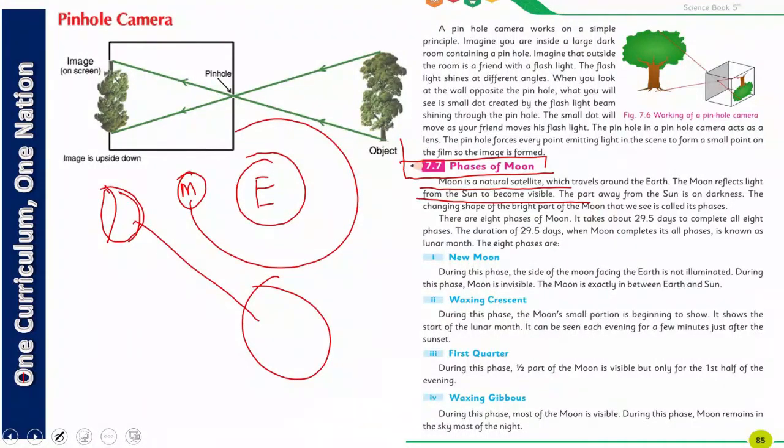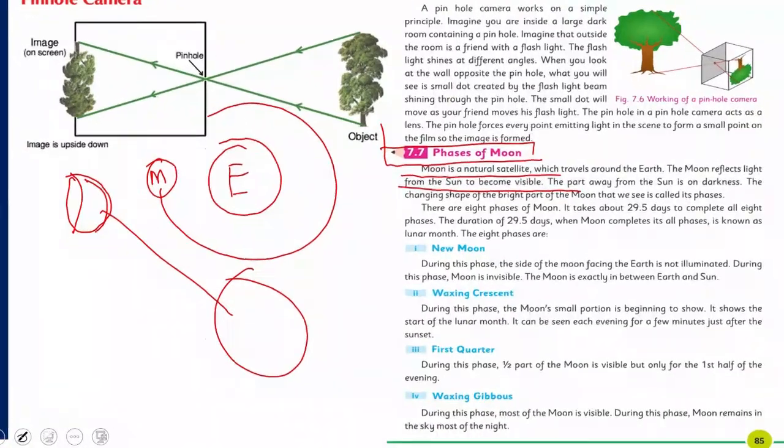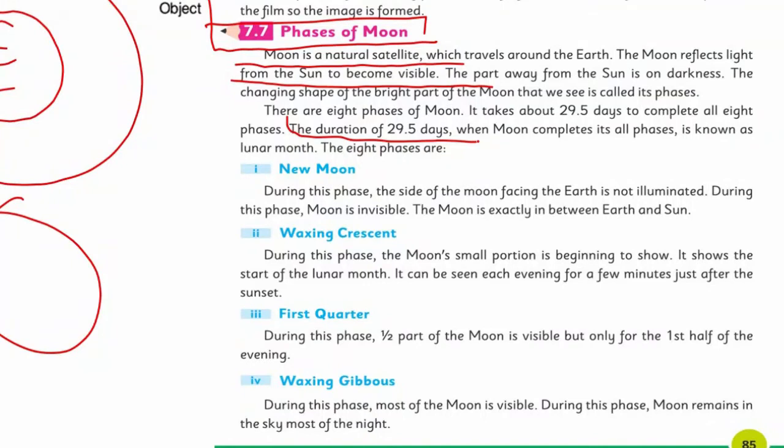And 8 phases complete in 29.5 days. After completing this, one month is formed, a full month, and this month is called lunar month. One is the calendar that you follow, first, second, third, then 30th. And some months have 28 days like February. When it's a leap year, it becomes 29 days.